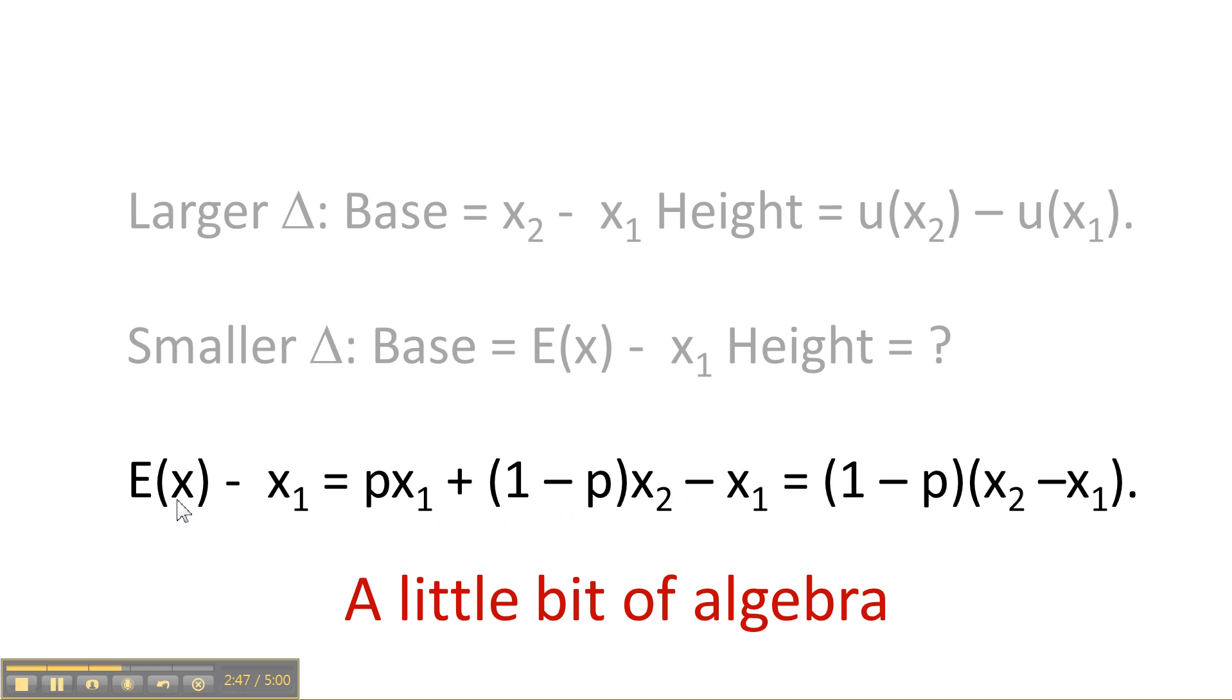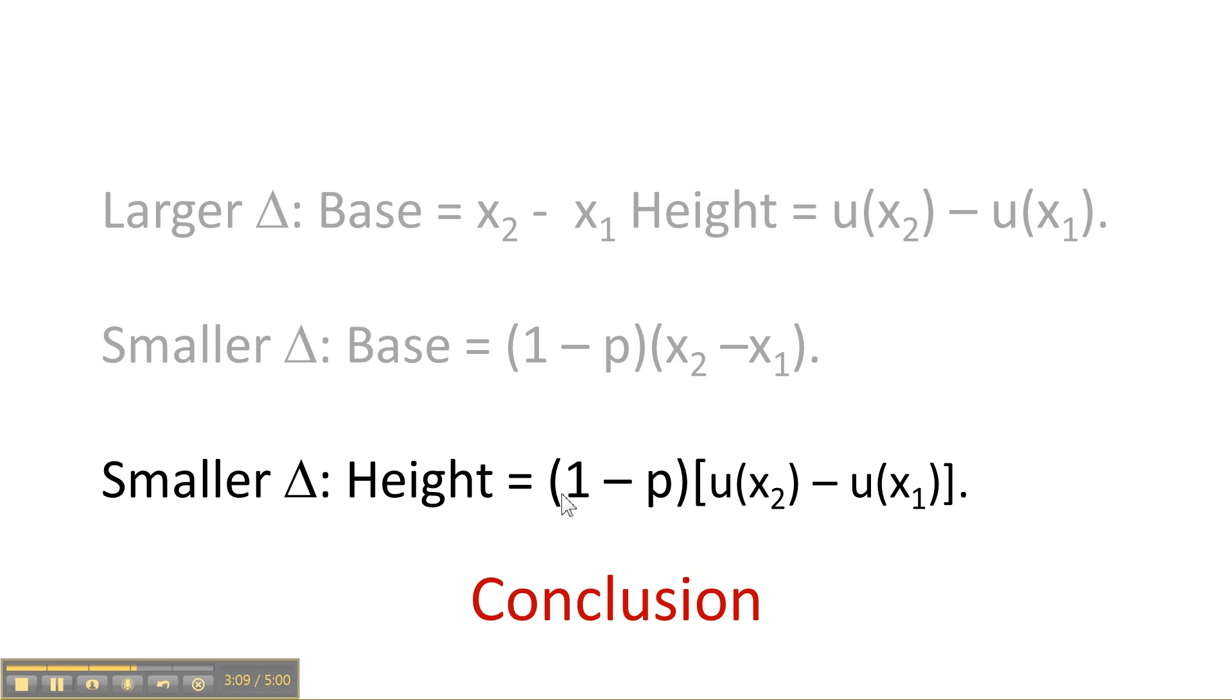Well, expectation of x minus x1 is px1 plus 1 minus px2. That's expectation of x minus x1, which is 1 minus p times x2 minus x1. So the base of the smaller triangle is 1 minus p times the base of the larger triangle. And since the triangles are similar, the heights are also in that proportion 1 minus p.